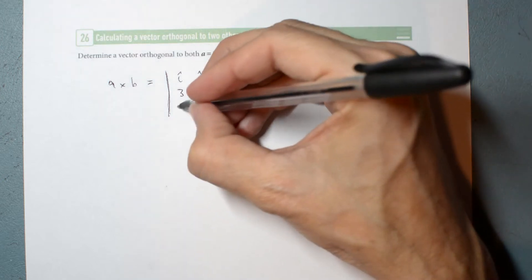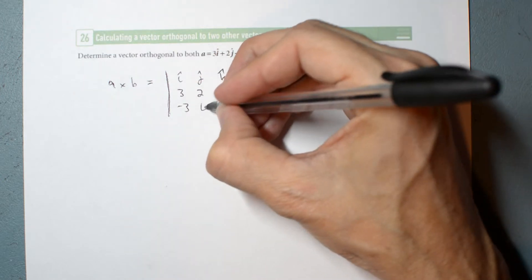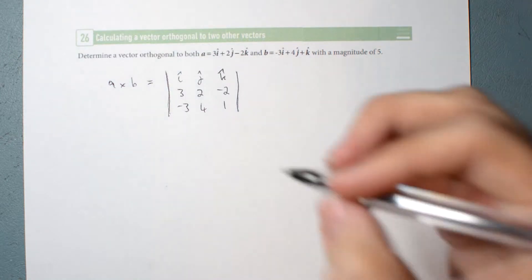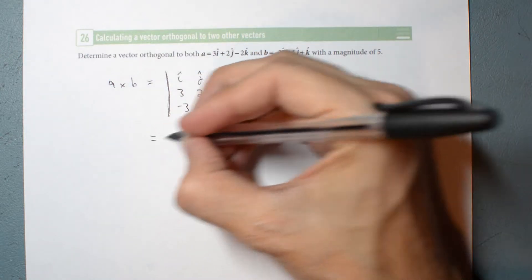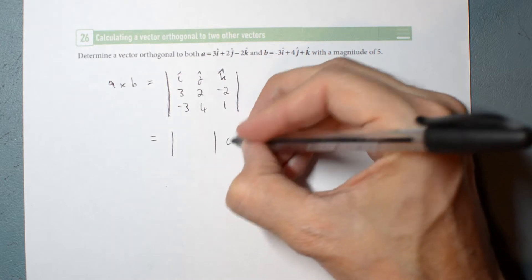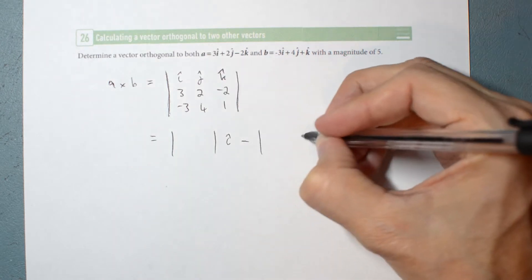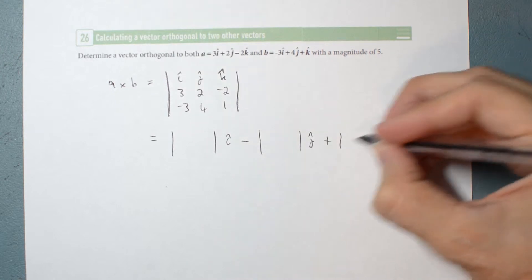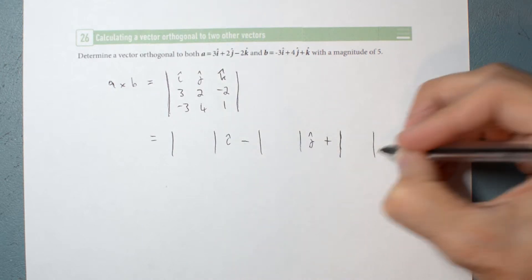Negative 3, 4, 1. Okay, so that is something I hat minus something J hat plus something K hat.